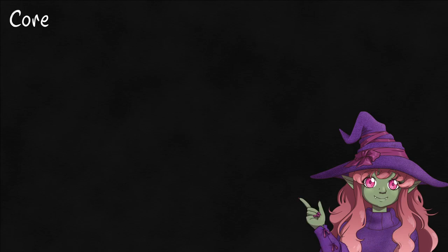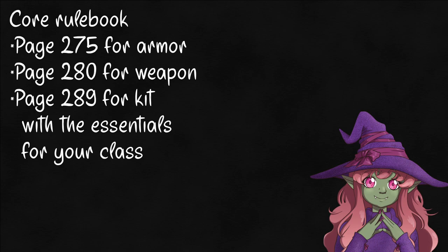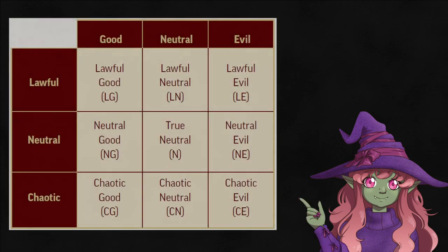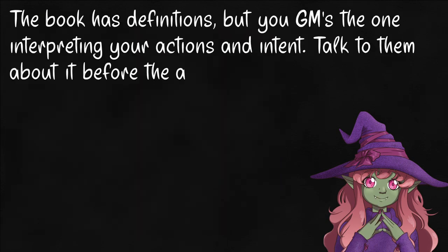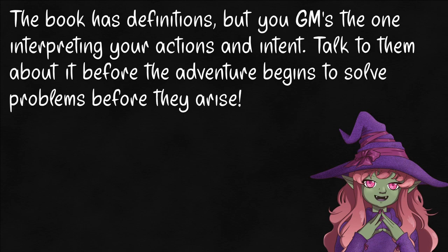Now the only thing left is filling out your alignment and buying equipment. Everyone gets 15 gold to start with. Go pick out your weapon, your armor, and I recommend getting the kit listed for your class. After that, just have fun shopping. As for alignment, it's lawful, neutral, or chaotic, paired with good, neutral, or evil. Write down whatever you think you are, then go talk to your GM to confirm. The game's definitions are on page 29, but the only thing that actually matters is what your specific table rules — and yes, that goes with every rule, but this is the one that's up for the most interpretation.